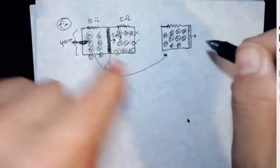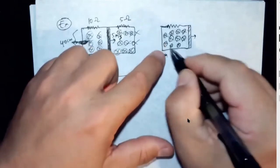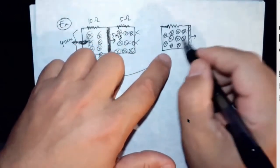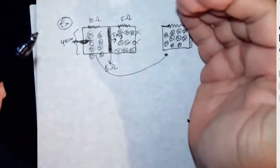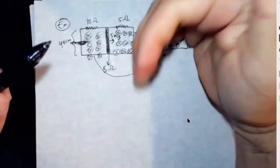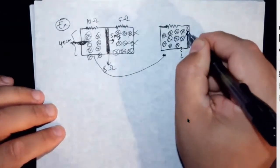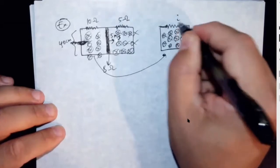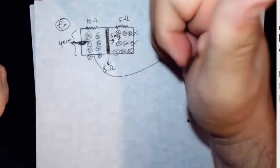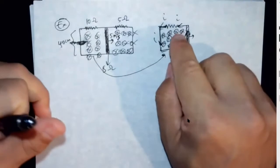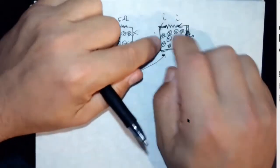If the field is into the board and the area is increasing, the kind of current that should be induced is to try to fight against that. So a counterclockwise current should be induced, because a counterclockwise current will create a field out of the board and it's going to try to fight against the field which is into the board and increasing.